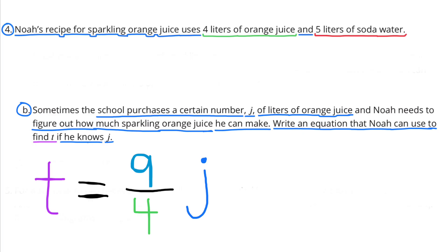Part B: Sometimes the school purchases a certain number J of liters of orange juice, and Noah needs to figure out how much sparkling orange juice he can make. Write an equation that Noah can use to find T if he knows J. T equals 9 fourths times J.